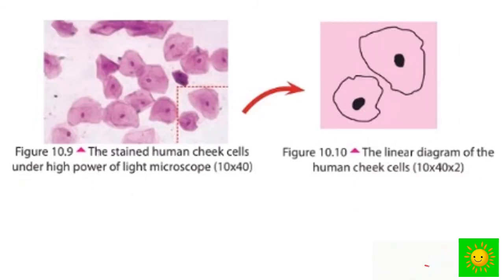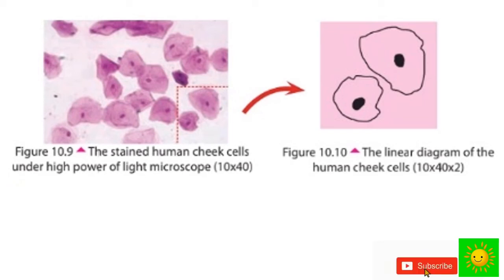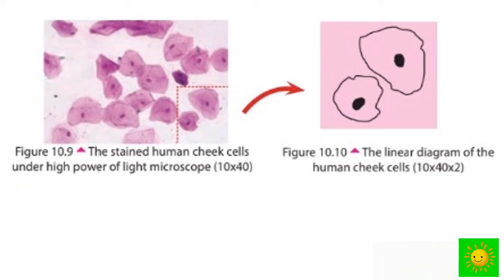You can see a stained human cheek cell under a high-power light microscope. The magnification is 10 into 40 times. When we are drawing the linear diagram, it is 10 into 40 into 2.